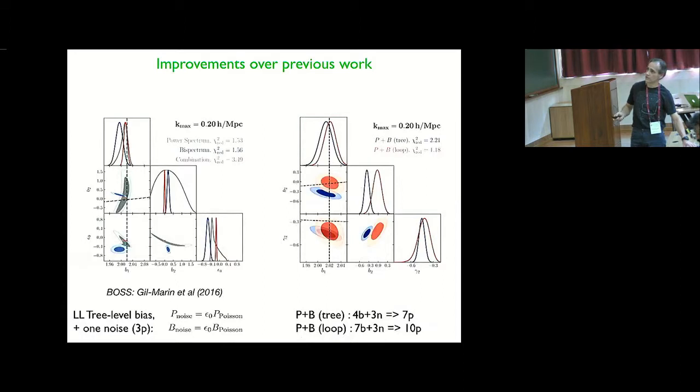As you'll see, so this shows, let's compare to the current state of the art. So on the left is the current state of the art, if you want, is what people have used for analyzing BOSS, in which they have three free parameters. So they have tree-level bias, B1, B2, and gamma 2, this quadratic tidal tensor. They assume that it's local Lagrangian, so they assume that it's related to B1. So that was not a free parameter.